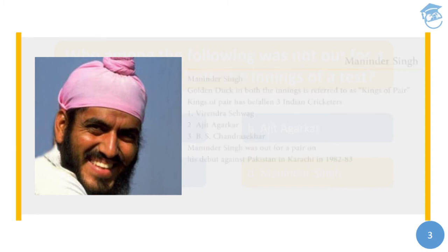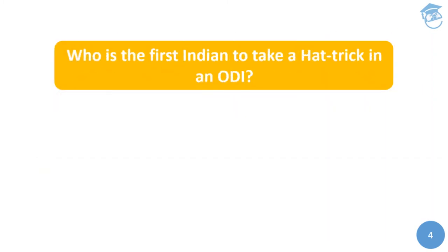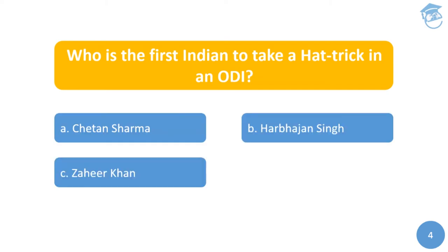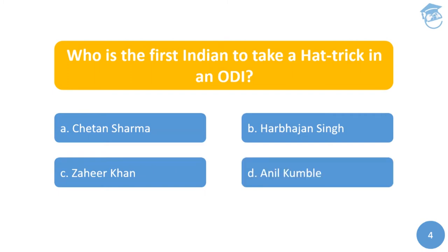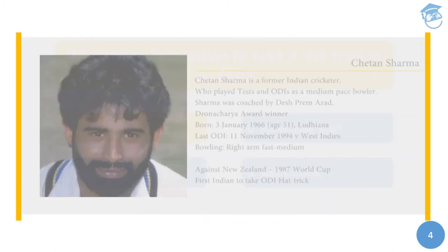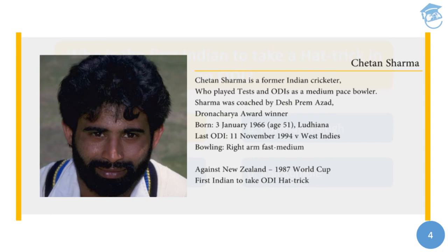Next question: Who is the first Indian to take a hat-trick in an ODI? Options are: A) Chetan Sharma, B) Harbhajan Singh, or C) Zaheer Khan. The answer is Chetan Sharma. He achieved this feat against New Zealand in the 1987 World Cup at Nagpur, becoming the first Indian to take an ODI hat-trick.